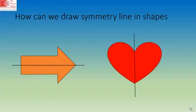How can we draw symmetry line in shapes? There are two shapes we have taken. One is the arrow and other is the heart. We have drawn a symmetry line in the arrow to divide the arrow into two halves, and we have drawn a symmetry line in the heart and we have divided the heart into halves.